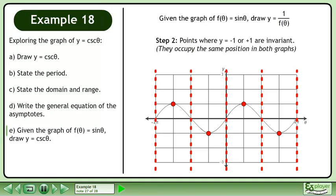In Step 2, points where y equals negative 1 or positive 1 are invariant. This means that they occupy the same position in both graphs.